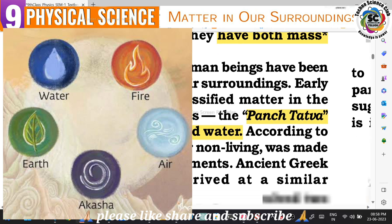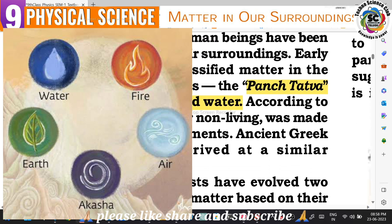According to Indian philosophers, everything - living or non-living - is made up of these five basic elements: air, earth, fire, sky, and water. Every object in our surroundings is made up of these five Panchatatwa elements.